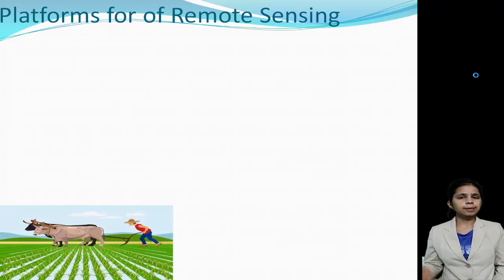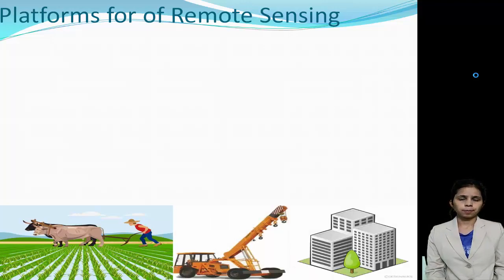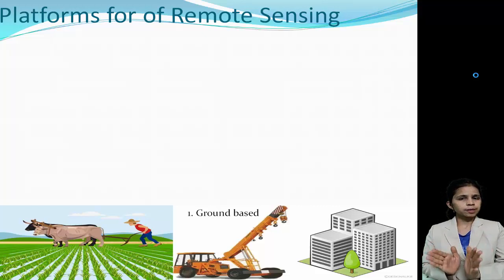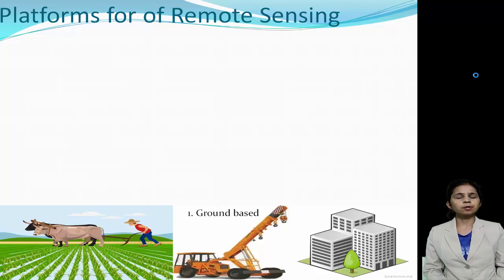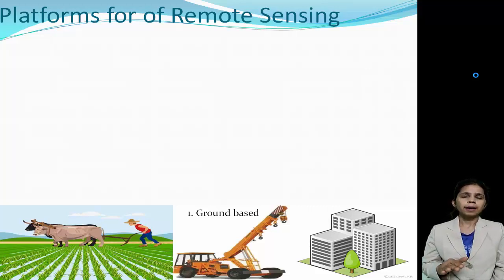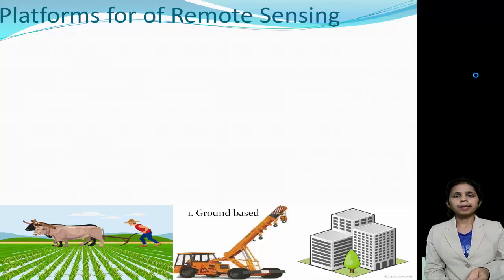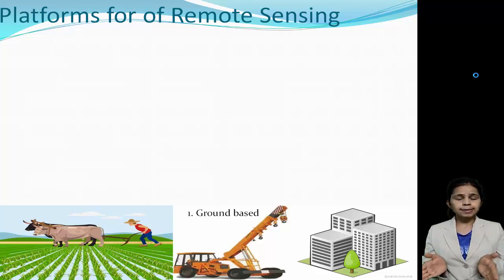In ground-based platform remote sensing, consider an agricultural land or a small piece of farm with a farmer. If we have a camera mounted on a crane or a building, we can get a clear picture of that small part of the field and even identify types of crops. In ground-based platform remote sensing, the remote sensors are placed at a height of about 50 meters from the earth's surface on towers, buildings, cranes, and similar tall structures. The advantage is it can give you high-quality pictures and you can study a small piece of farm or field in detail, even identifying types of crops.